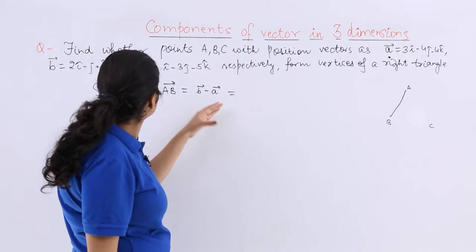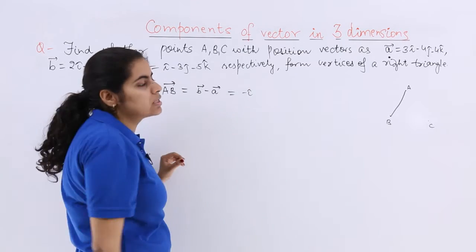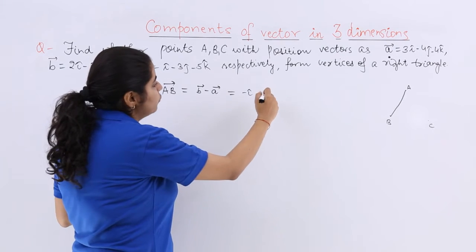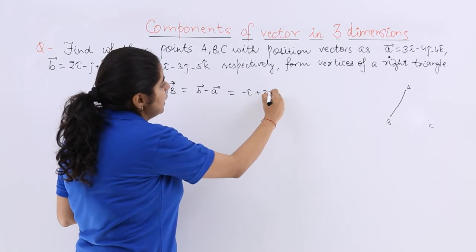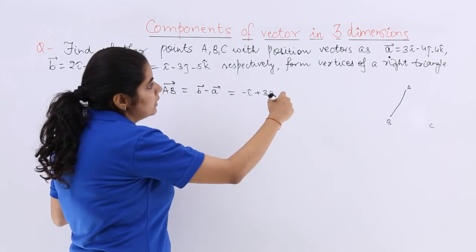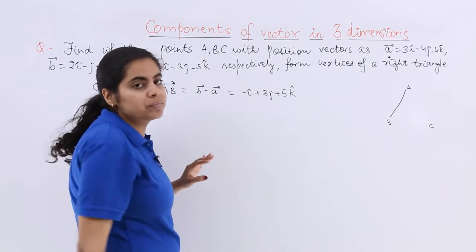So B minus A, where is B? B is here. It is 2i cap minus 3i cap which is minus i cap. Then it is minus j cap plus 4j cap which is plus 3j cap. This you have to do very carefully. This is plus k cap then plus 4k cap which becomes plus 5k cap.